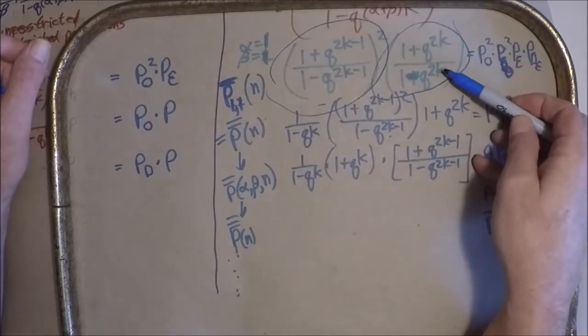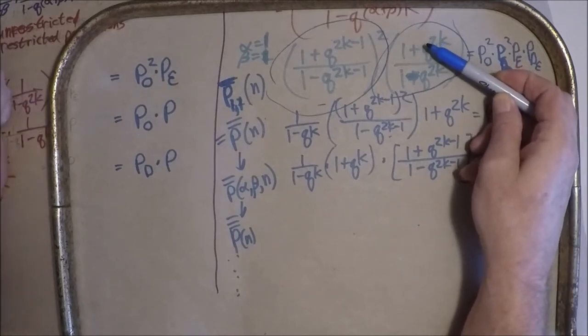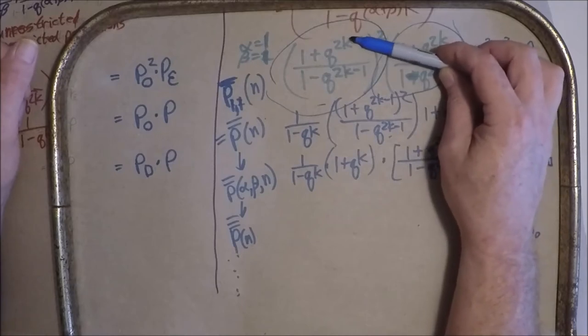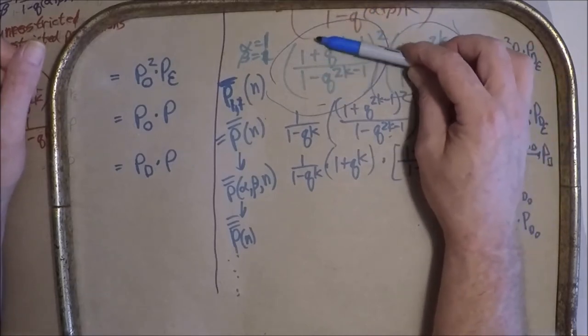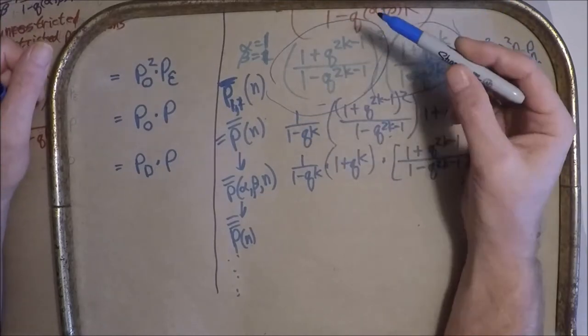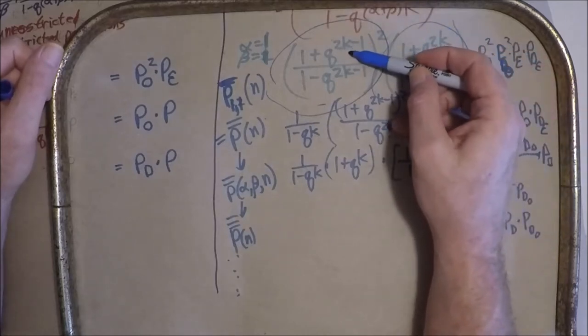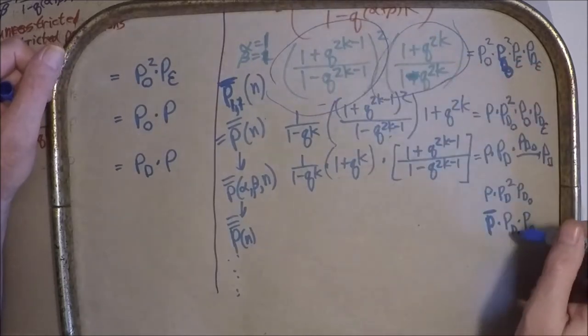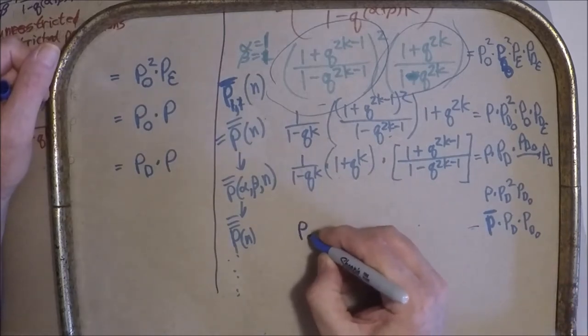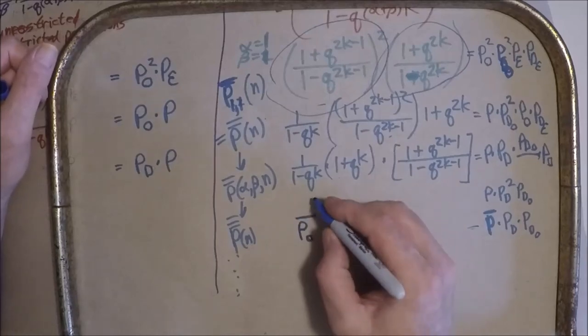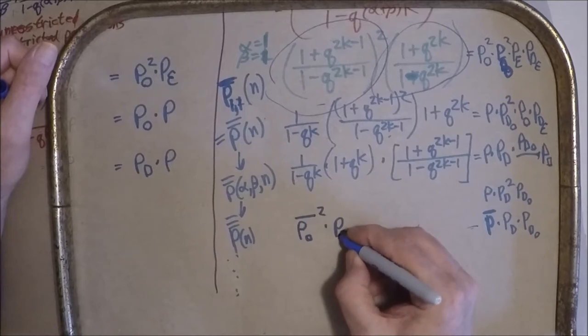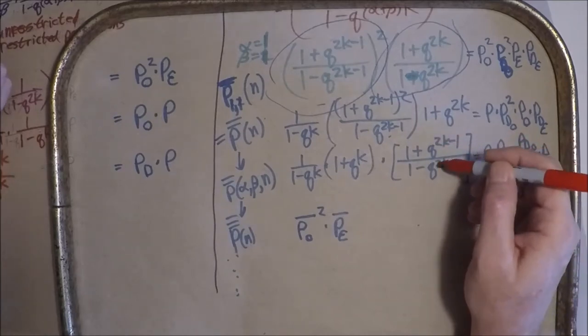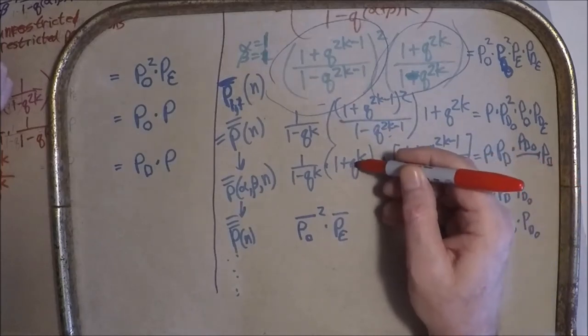Notice that if this were K and not 2K, that this would be basically over partitions. One plus Q to the K over one minus Q to the K. And similarly here, if these exponents were not 2K minus one, but K, we would have over partitions squared. So we can intuit that these are odd over partitions squared and that these are even over partitions. So that another expression here would be P O odd over partitions squared dot even over partitions. To be clear, I'm talking about over partitions into odd parts and over partitions into even parts.